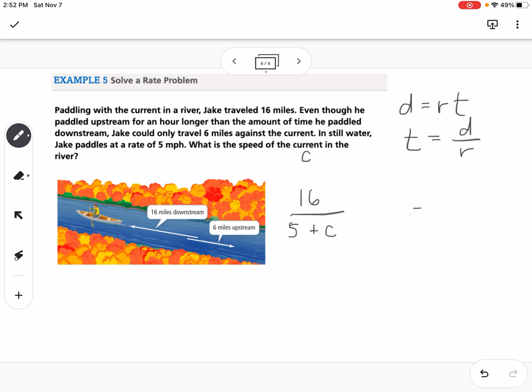And then I'm going to wait here to come back and fill that in, and then I'm going to leave a little space. And then we know that going against the current, he traveled 6 miles, and we know that that's going to be 5 minus C, because he's going opposite the current. Now, I also said that this, going against the current, was an hour longer, so it's going to be the with the current plus 1 would equal opposite the current. So now that we have that set up, we can solve this.